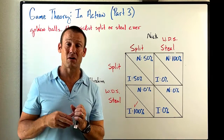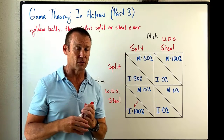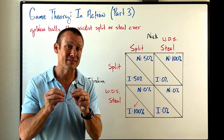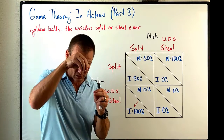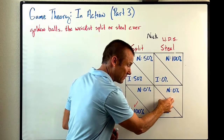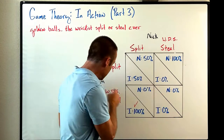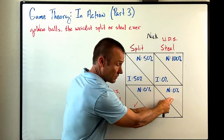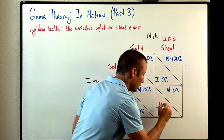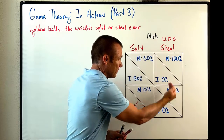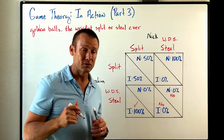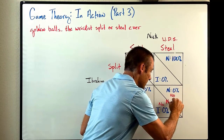Now we're going to see if any of these outcomes are Nash equilibria. A Nash equilibrium is an outcome in which neither player has an incentive to change their strategy given the strategy the other player played to get to that outcome. So we evaluate each cell. First: both played steal. Does Ibrahim have an incentive to change his strategy given that Nick played steal? Go from 0% to 0%? Nope — no incentive. And given Ibrahim played steal, does Nick have an incentive to switch from steal to split? No. Two no's — that's a Nash equilibrium. We just found a Nash equilibrium.